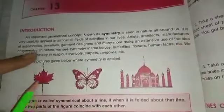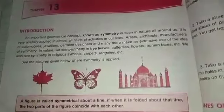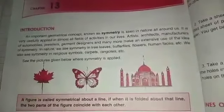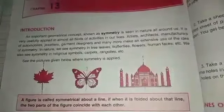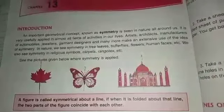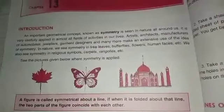Now what is the line of symmetry? The figure has a line of symmetry about that line — this line divides the leaves into two parts and those two parts are identical to each other. They coincide with each other, they superimpose each other, they are exactly the same.